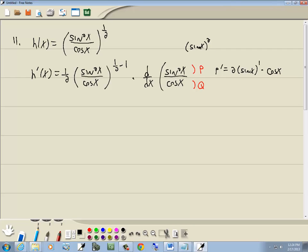So again, we had a parentheses to a power. Take your power, put it out in front. What's inside the parentheses remains as is. Lower your power by 1. And then you multiply it times the derivative of what's inside the parentheses. And the derivative of a sine is cosine.